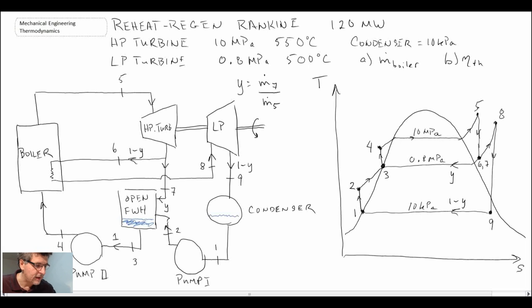That is the process diagram and the process schematic. The next thing we'll do is start to get the state information. Once we have state information, we can get enthalpy, entropy, things like that, and after that we'll look through and start doing the first law analysis.